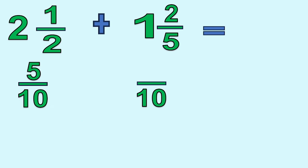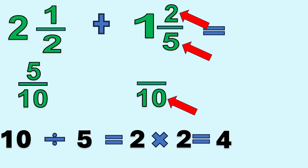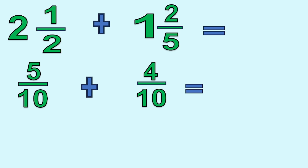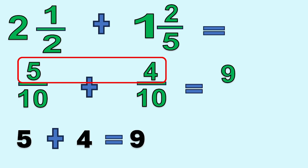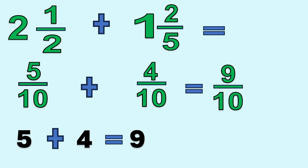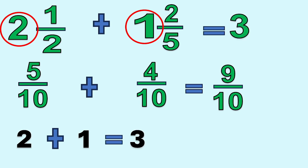Next is the second fraction. Divide the LCD 10 by denominator 5: 10 divided by 5 equals 2. Then multiply the answer by numerator 2: 2 times 2 equals 4. So our new numerator will be 4. We can add now because the denominators are already the same. Add the numerators: 5 plus 4 equals 9. Copy the LCD 10. Then add the whole numbers: 2 plus 1 equals 3. So the final answer is 3 and 9 tenths.